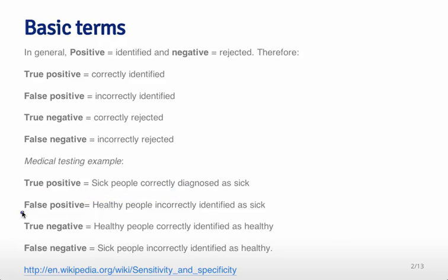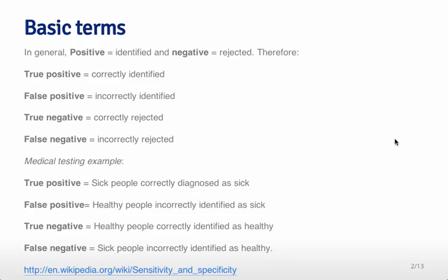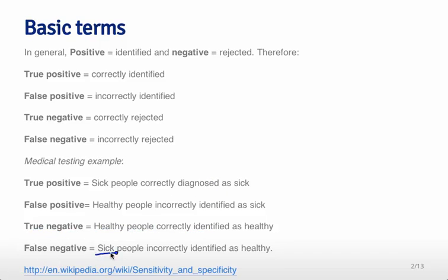A false positive means you are a healthy person, but we still identified you as being sick even though you weren't. A true negative is somebody who is truly healthy and we identified them as being negative — truly healthy. A false negative is somebody who is sick but we incorrectly identified them as healthy; the negative part means we identified them as healthy.